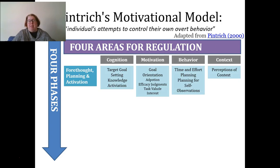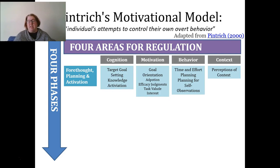The forethought phase is similar to the first phase in Zimmerman's model. In the cognition area, we're setting goals and activating knowledge — thinking about what we know. We're motivated by our goals, whether we're thinking about performance or comparison to others, our judgments of efficacy in completing the task, our task value and interest. We also have behaviors — the time and effort we put into planning and self-observations — and we're perceiving the context of the environment in which we'll be doing the task.